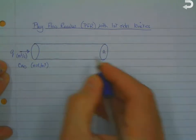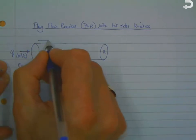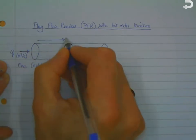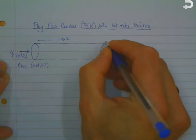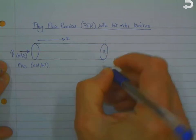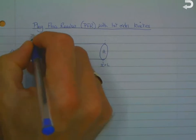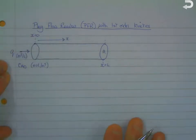And the distance traveled along here is x, and at the end here we've got x equals L, and at the inlet x equals zero.